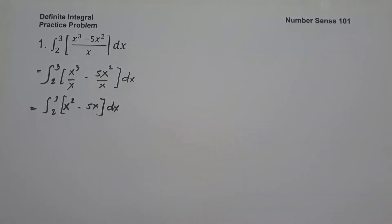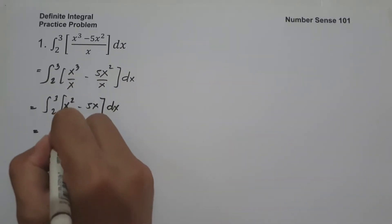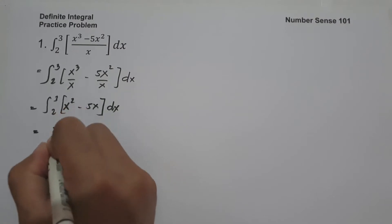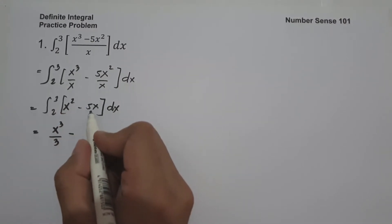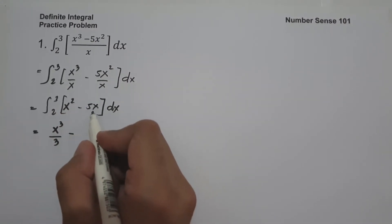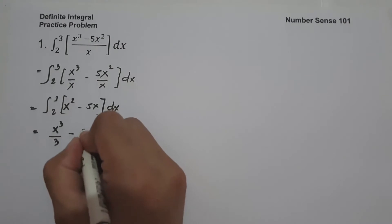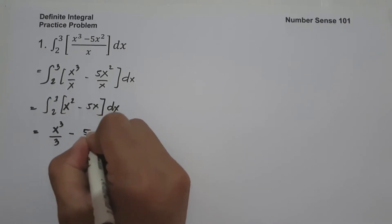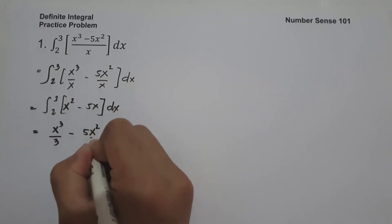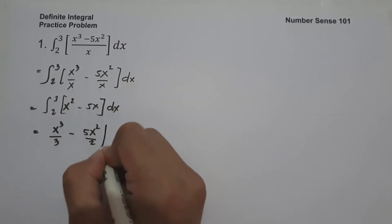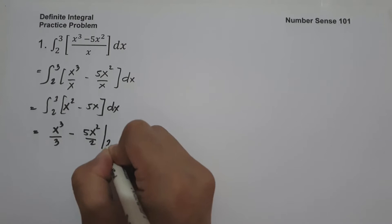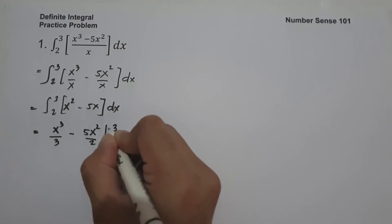The antiderivative of x squared is x cubed over 3, minus the antiderivative of 5x which is 5x squared over 2, evaluated from 2 to 3.